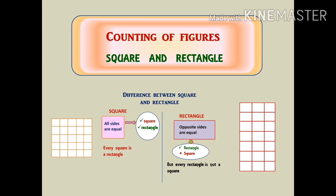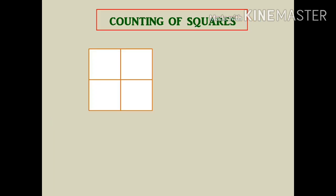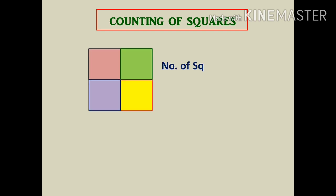First let's see the counting of squares problem. If we want to count the number of squares in this image, normally we count them. So if we start counting there are 1, 2, 3, 4, and another one — 5. So the total number of squares in this image is 5.